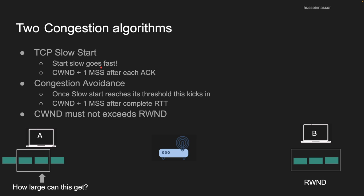That's how the slow start algorithm works — it's very aggressive. Compare that to congestion avoidance, which is the second phase of congestion control. We flip from slow start to congestion avoidance because slow start has a threshold, and once we reach that threshold we become more conservative. Once the slow start reaches its threshold, congestion avoidance kicks in.